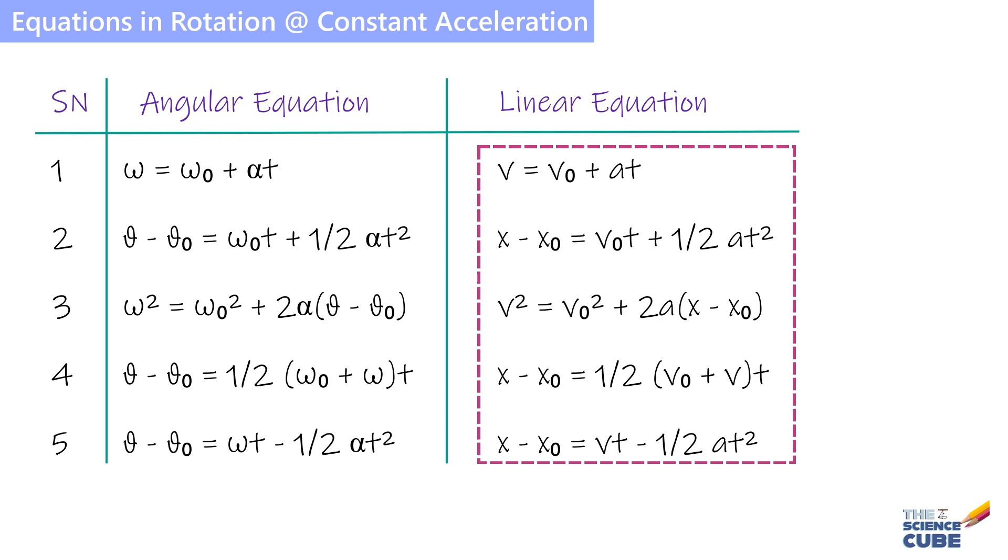If you take a moment to pause, you can see the striking similarity between both sets of equations. Omega here is the angular velocity at any given time, quite the way you have velocity V at any time in linear motion. Omega 0 is the initial angular velocity. Again, it is equivalent of V0 or the initial velocity that we consider in linear motion.